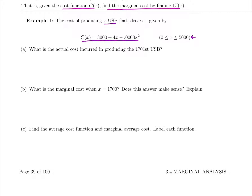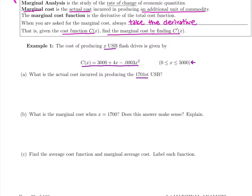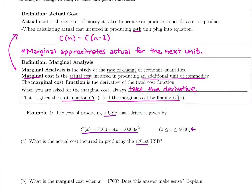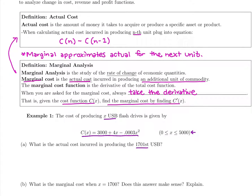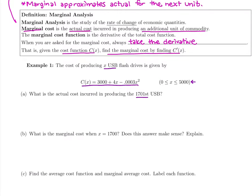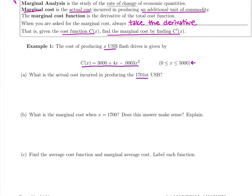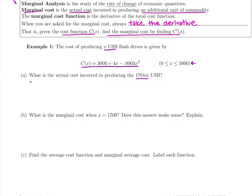The first part asks: what is the actual cost incurred in producing that 1,701st USB? Looking at our actual cost formula, we plug in the number we want to know minus the number before it into the total cost function. So we're going to compute C of 1,701 minus C of 1,700.